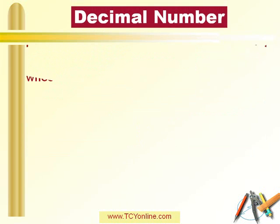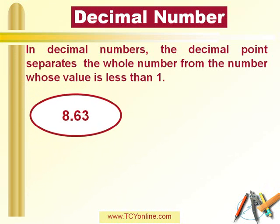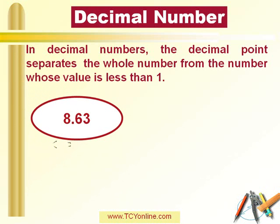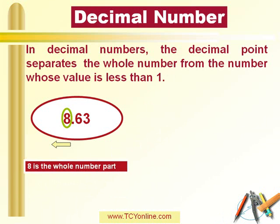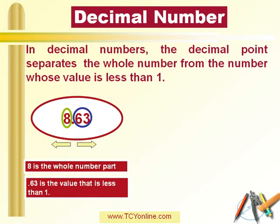In a decimal, the decimal point separates the whole number part from the number whose value is less than 1. For example, in 8.63, the number on the left — that is 8 — is called the whole number part, while the number on the right of the decimal point is the part whose value is less than 1. So 0.63 has a value less than 1.